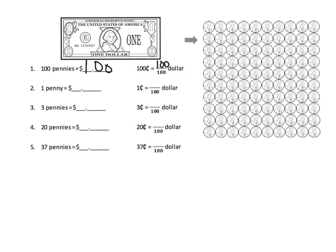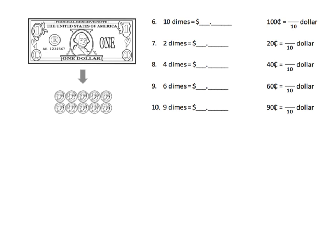If we look at 37 pennies — 37 cents equals 37 hundredths of a dollar, which we write as 0.37. The leading zero is not necessary, but it means we have zero dollars and 37 cents.